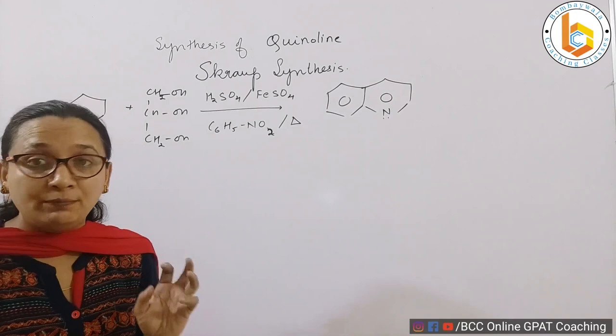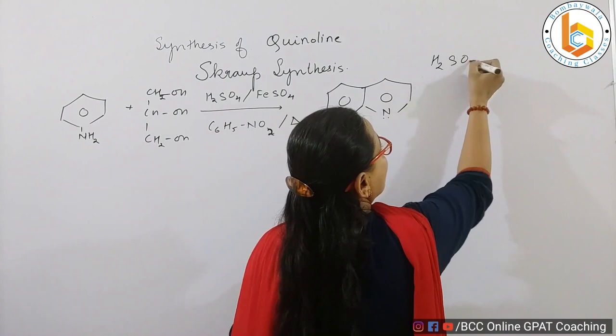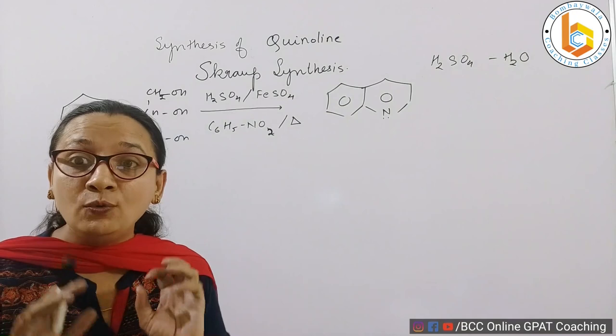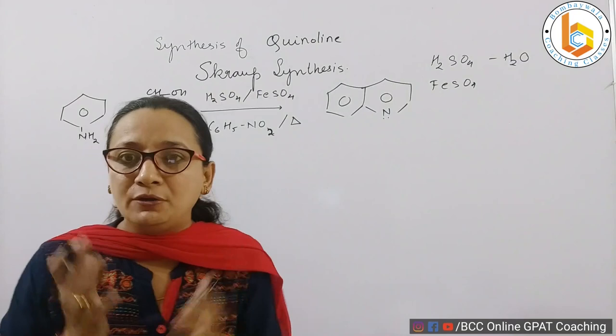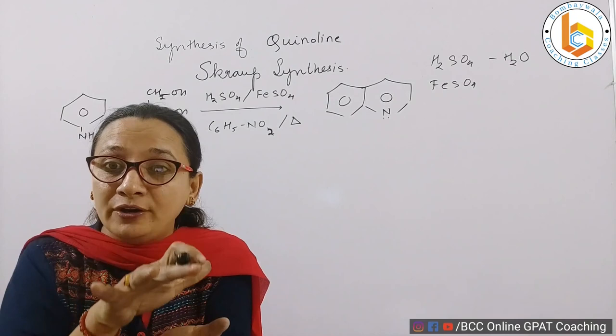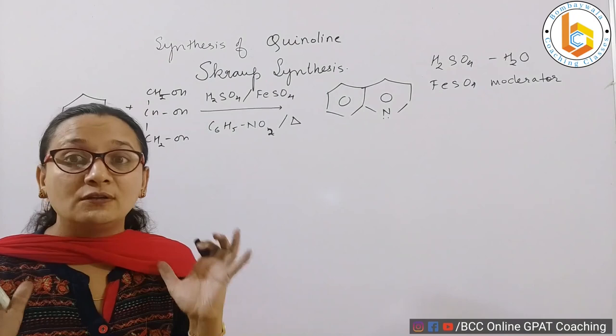Sulfuric acid is going to act as a dehydrating agent. It will allow water molecules to leave the system. Ferrous sulfate - you know this reaction is very vigorous, a bubbling exothermic reaction, so ferrous sulfate acts as a moderator in this reaction to calm it down, otherwise anything will burst out because the reaction is highly exothermic.